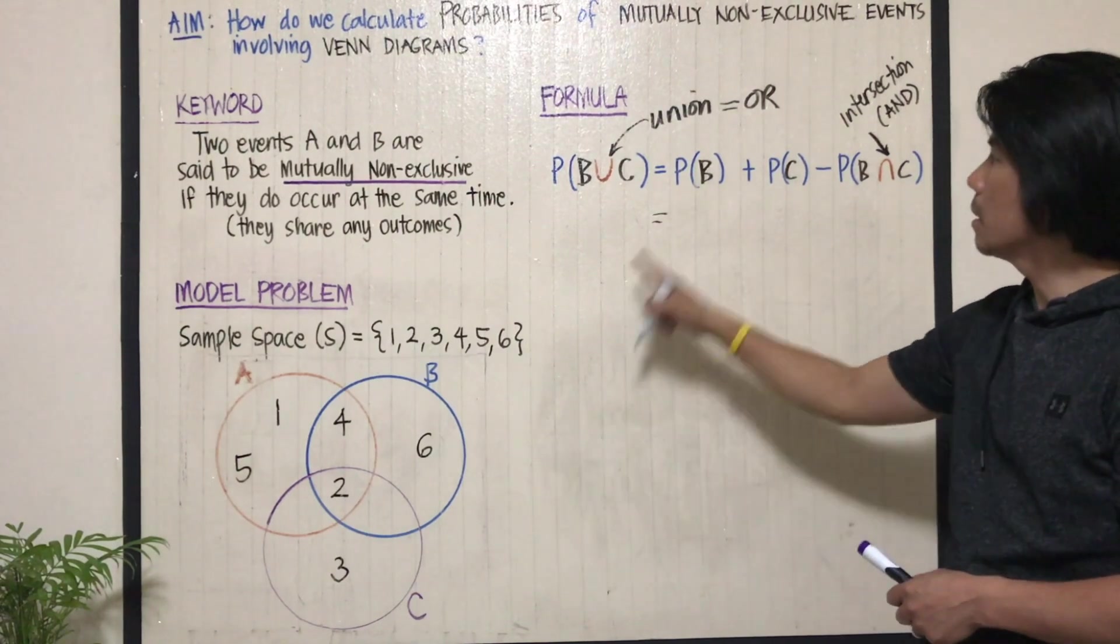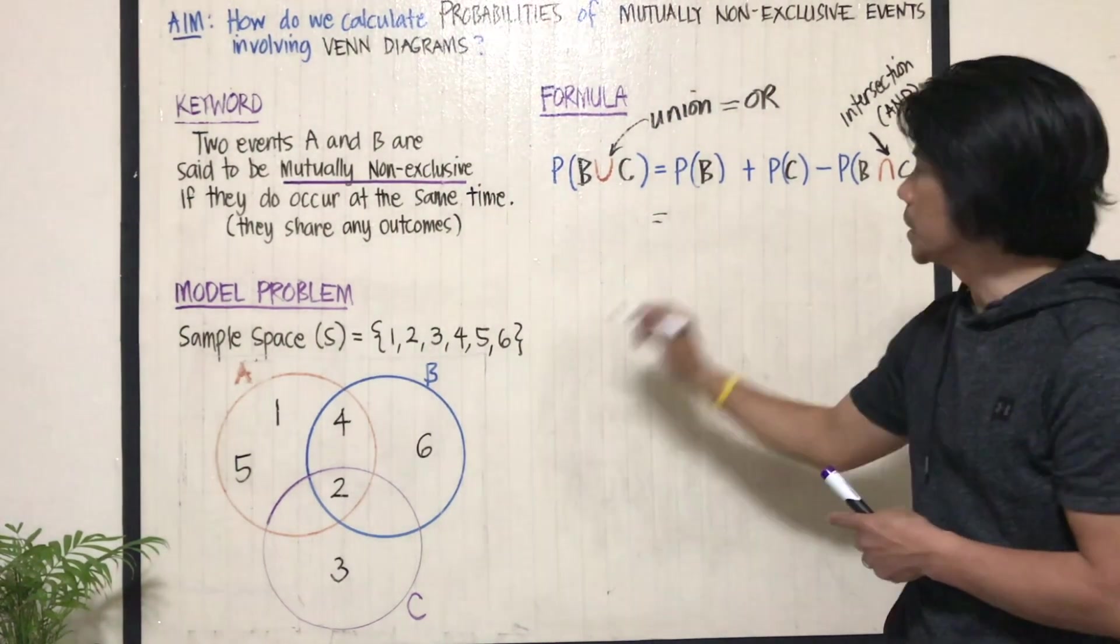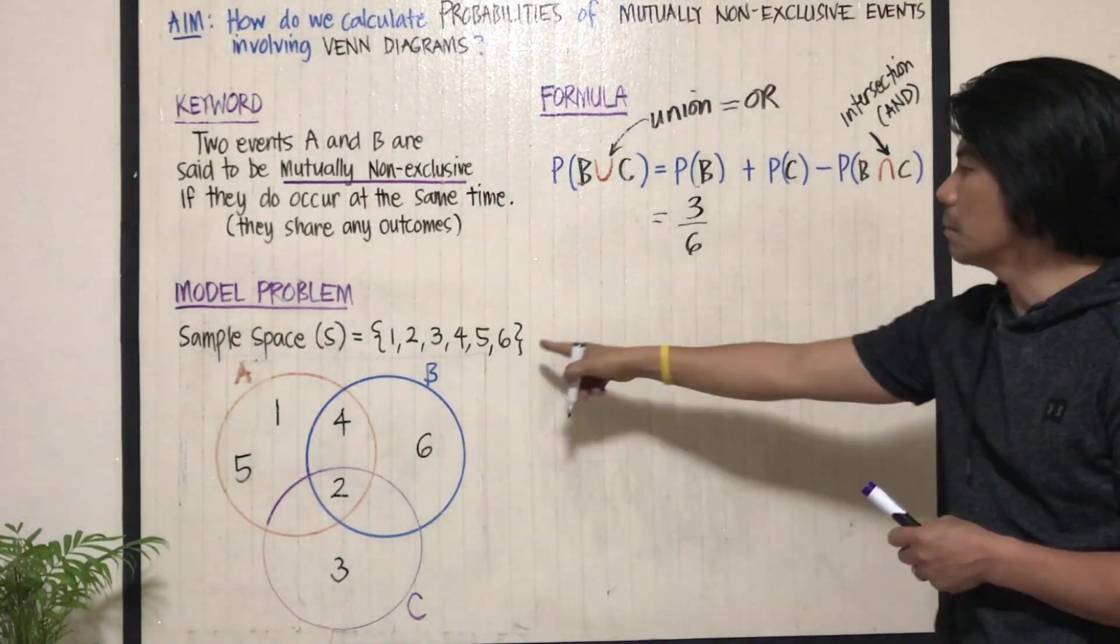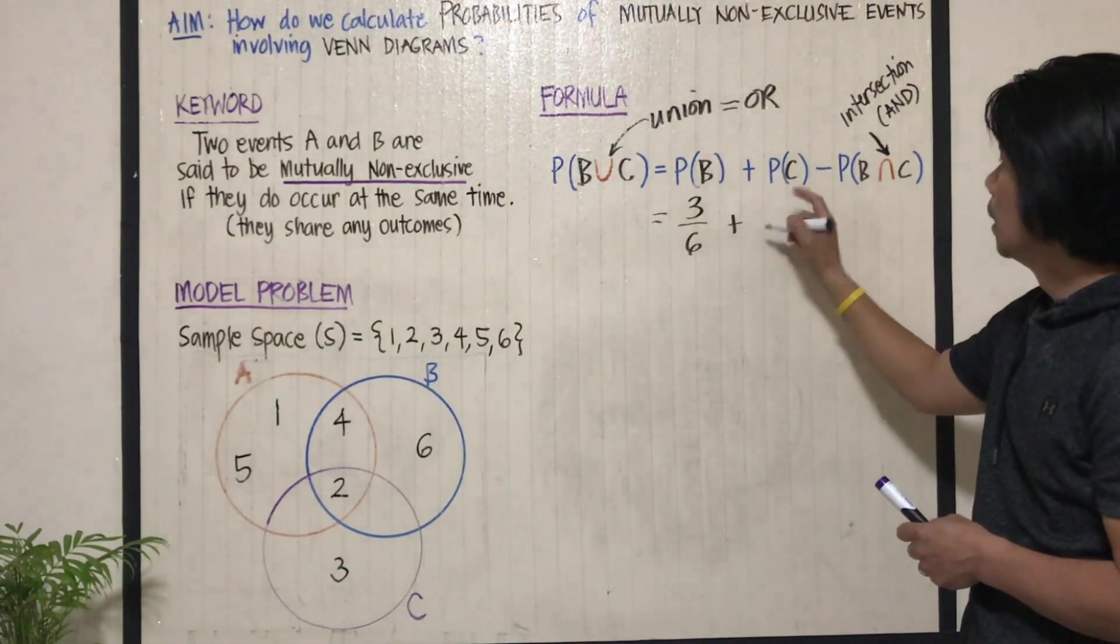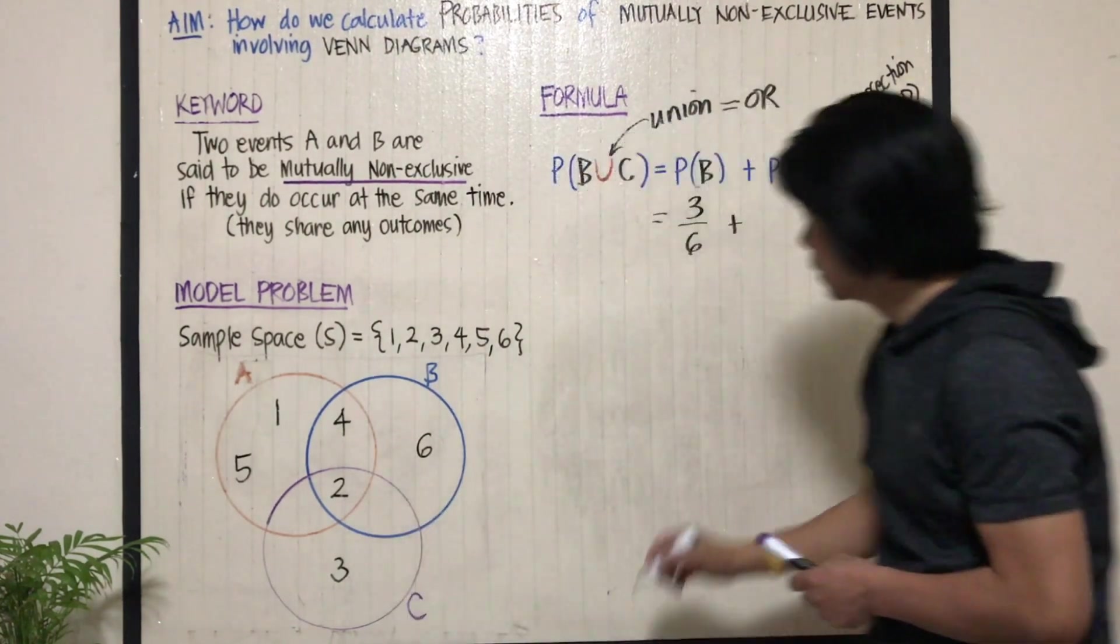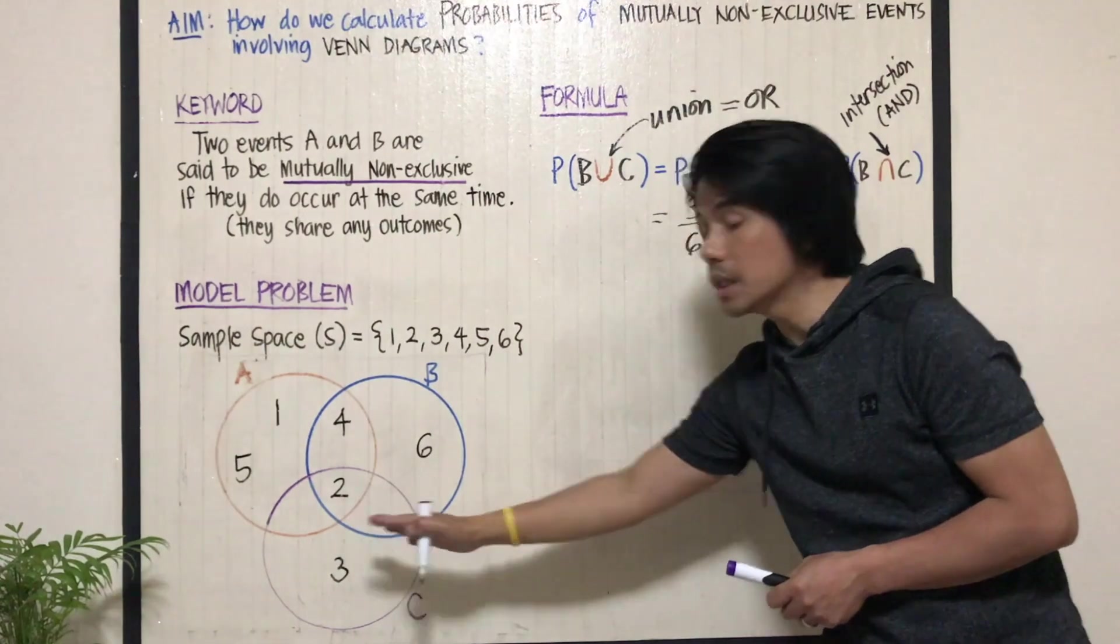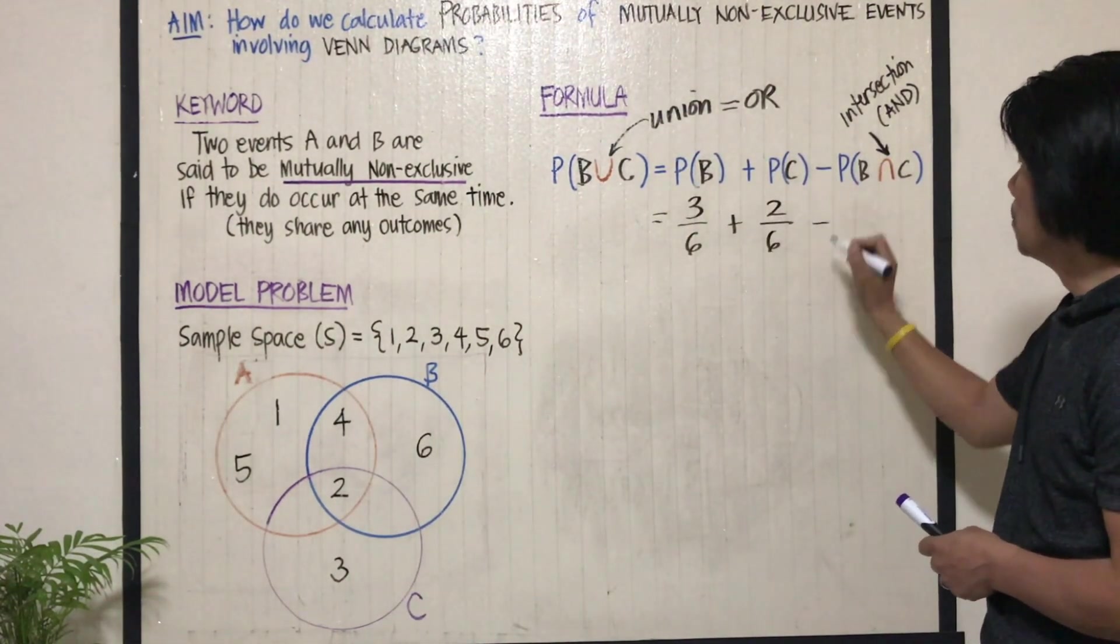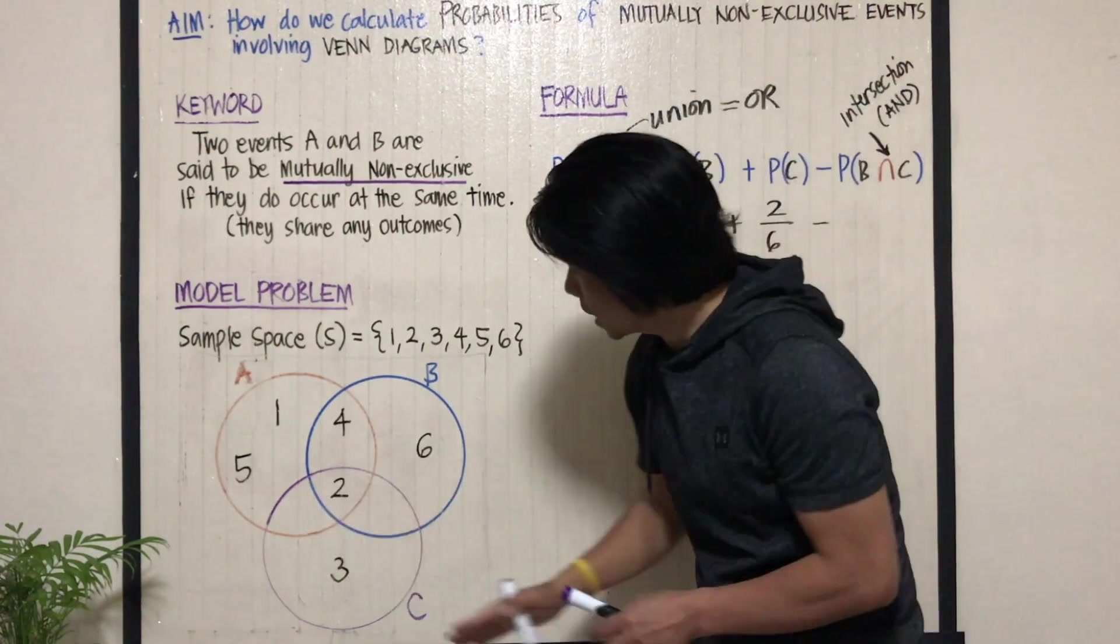Now, what's the probability of B? As we all know, it's three over six. That's the total number of sample space. C is how many events? Two and three. I mean, how many numbers inside event C? There are two out of six minus and then their intersection.